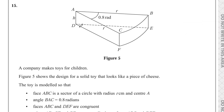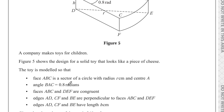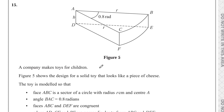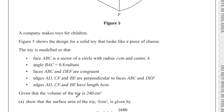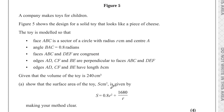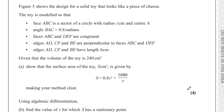For this question we're given a diagram showing a design for a solid toy that looks like a piece of cheese. The face ABC is a sector of a circle with radius R and centre A. The angle BAC is 0.8 radians. The face ABC and DEF are congruent. The edges AD, CF and BE are perpendicular to these faces and all have a length of H. Given that the volume of the toy is 240, we need to show that the surface area S equals a given formula, for four marks.